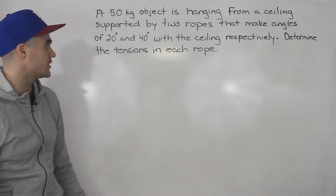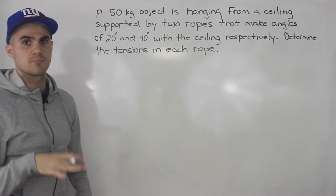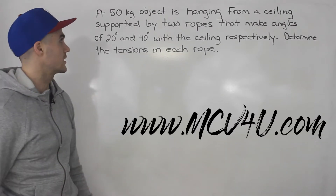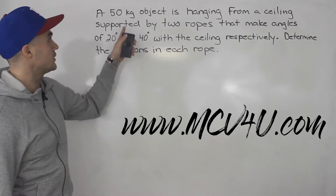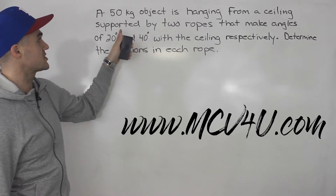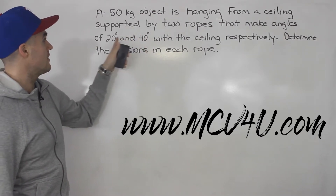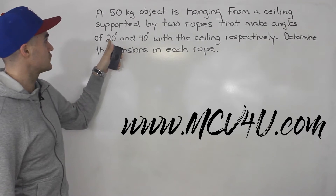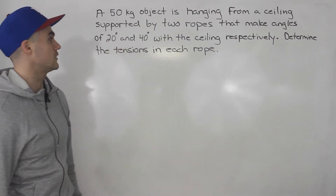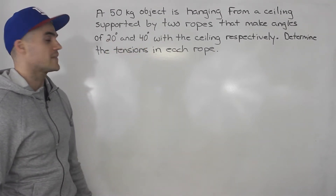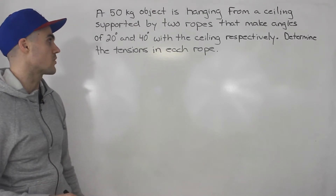Hey, welcome back everybody. Patrick here. Moving on to another question — this is a popular question that comes up. So a 50 kilogram object is hanging from a ceiling supported by two ropes that make angles of 20 degrees and 40 degrees with the ceiling respectively. Determine the tensions in each rope.